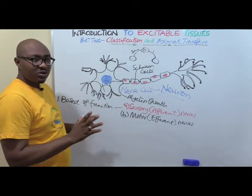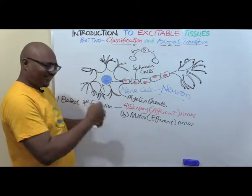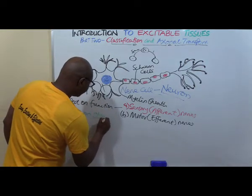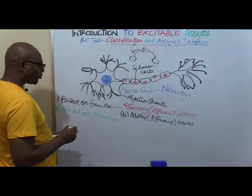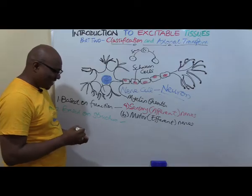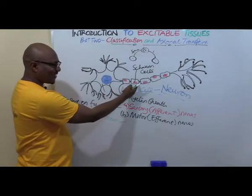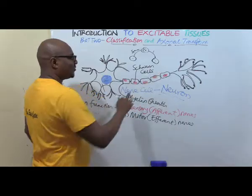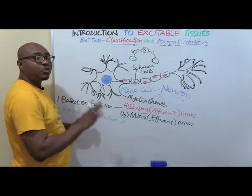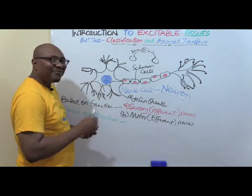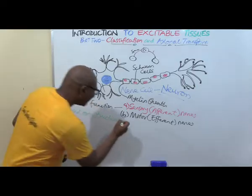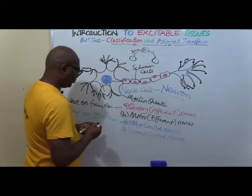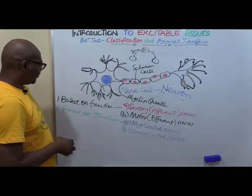Nerves can also be classified according to structure. Number two, based on structure. Remember these structures? We told you that some nerves do not have the Schwann cells or myelin sheaths. So you have myelinated nerves and unmyelinated nerves.